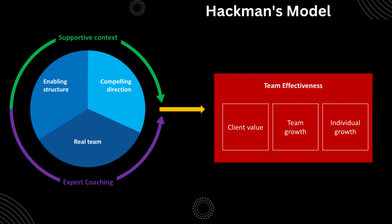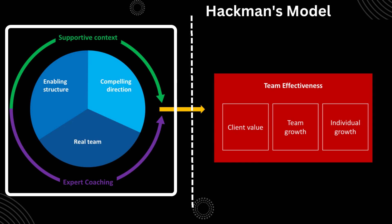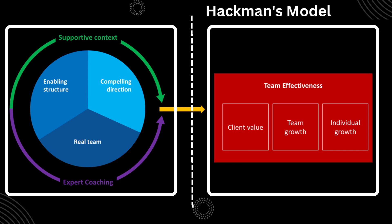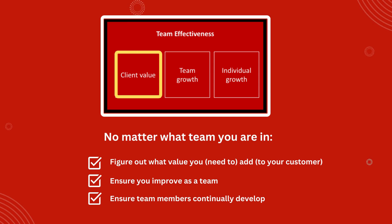You'll notice that the diagram is split into two. On the left-hand side, we have the core of the model — the enabling conditions. On the right-hand side, we have the criteria we can use to measure team effectiveness. The three criteria are: a team product acceptable to clients, growth in team capability, and group experience that is meaningful and satisfying for members. These are all things we can use to assess the effectiveness of a work team, regardless of the task or the setting.